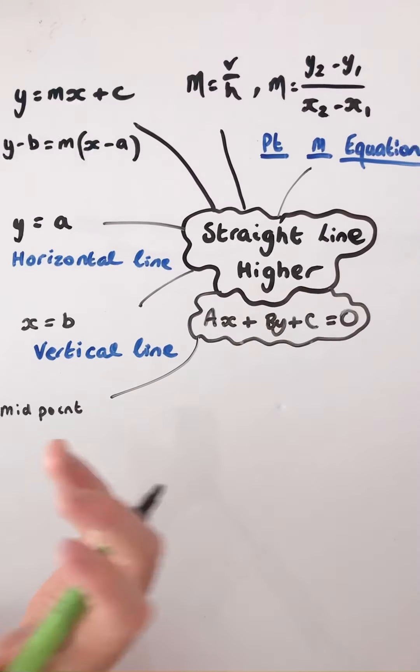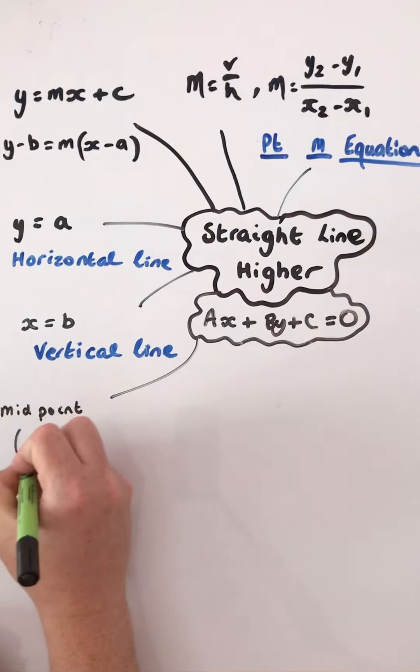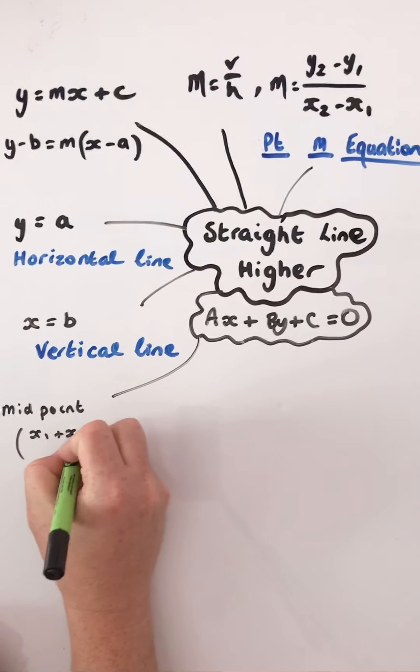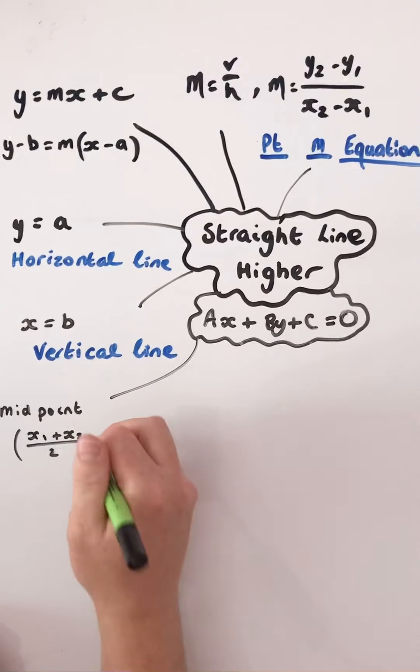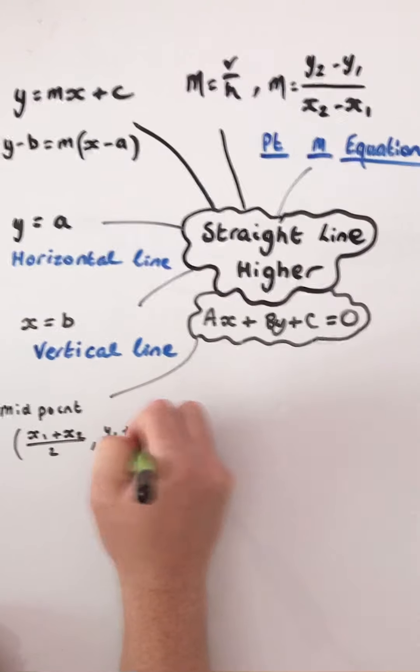Your midpoint, so your middle of your two coordinate points. That will be the average, the average of the x-values, and the average of your y-values.